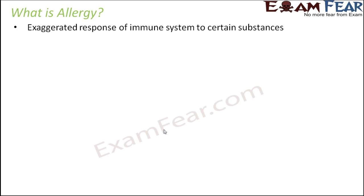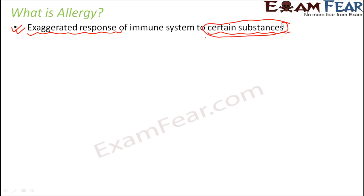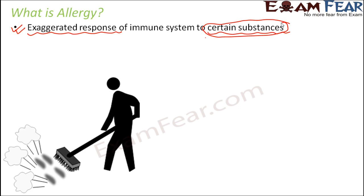Allergy is an exaggerated response of the immune system to certain substances. When the body is exposed to certain substances, the immune system overreacts. Normally, whenever there is a foreign substance entering the body, the immune system sends a response. But for some special substances, the immune system overreacts while responding — that exaggerated response of the immune system is seen as allergy. These substances for which the immune system gives this kind of special response are known as allergens.